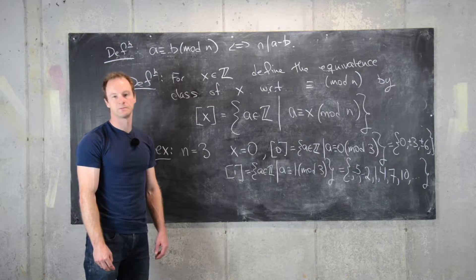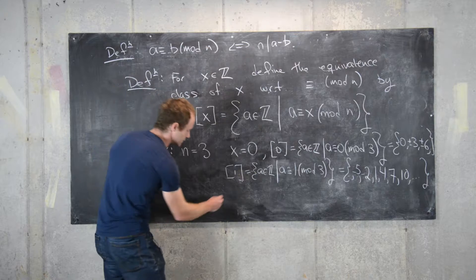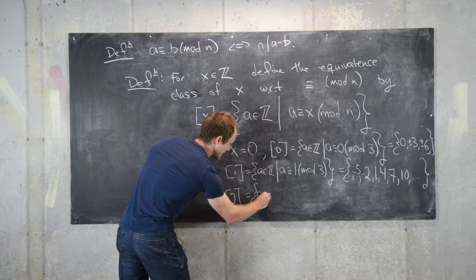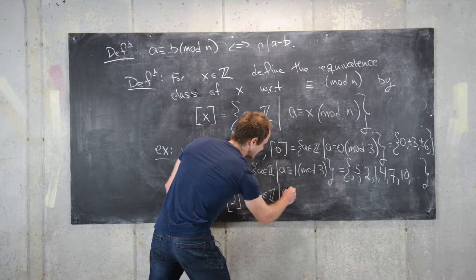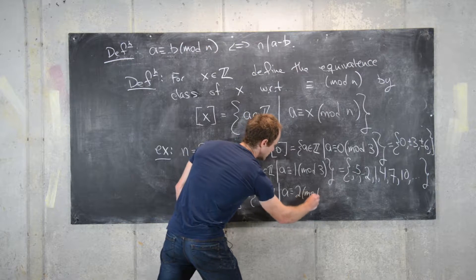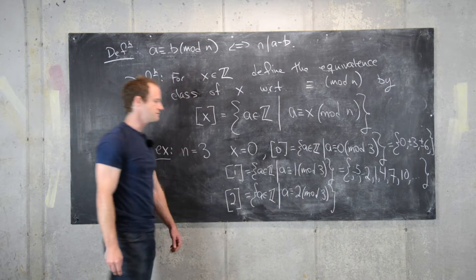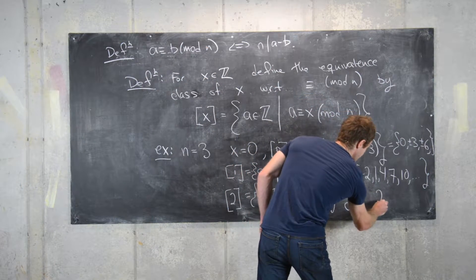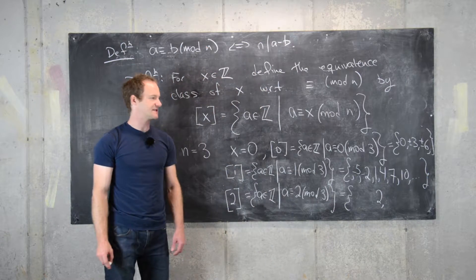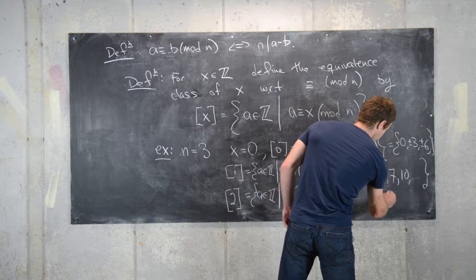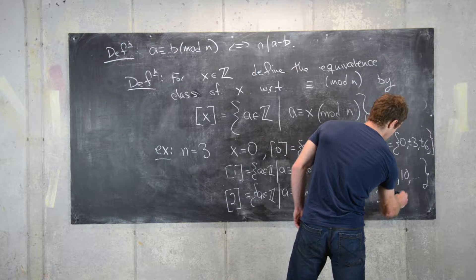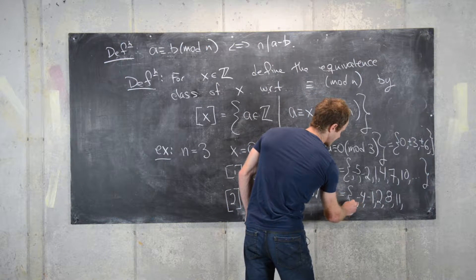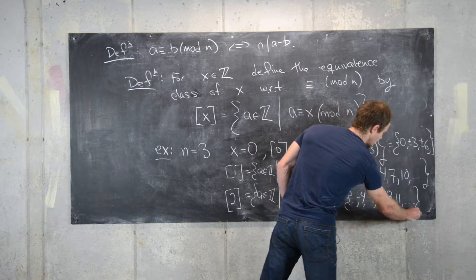Let's do one more: the equivalence class of 2. That's equal to all a in Z such that a is congruent to 2 mod 3. You might guess that 2 is a member because 2 minus 2 is 0, divisible by 3. Working up: 8 is a member, 11 is a member. Going back in the other direction: minus 1 is, minus 4 is, and so on and so forth.